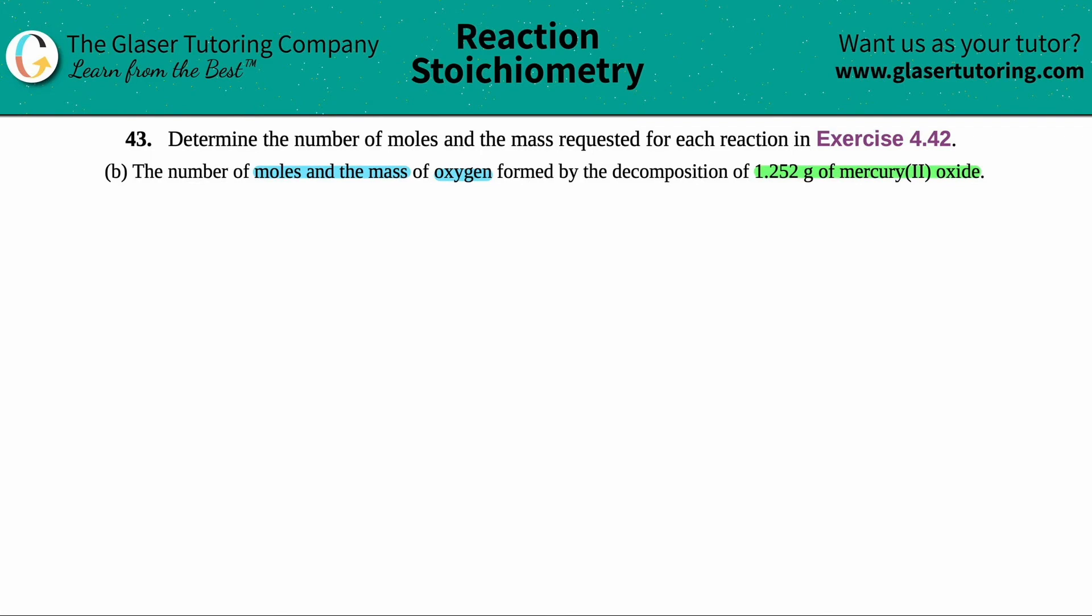Now, when we are given mass values or any values in general, and they're describing a chemical reaction, they gave us oxygen, they gave us a compound mercury 2 oxide, and they told us that it was being decomposed or undergoing decomposition. We have to write a balanced equation. There's no way around it. So the first thing we're going to do before we even solve any math, we have to write a balanced equation.